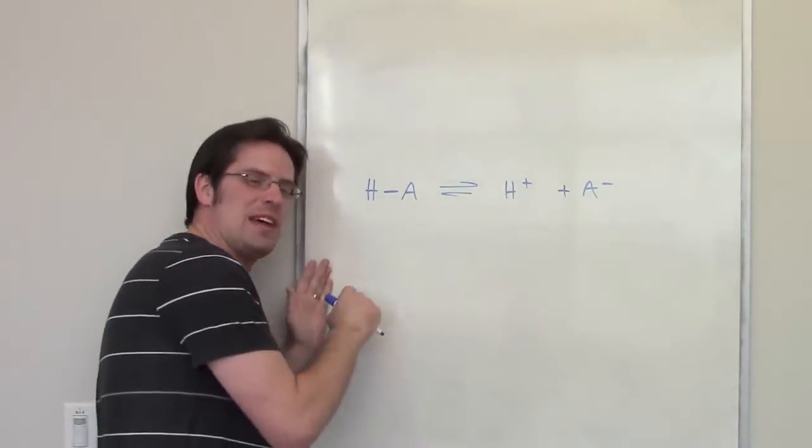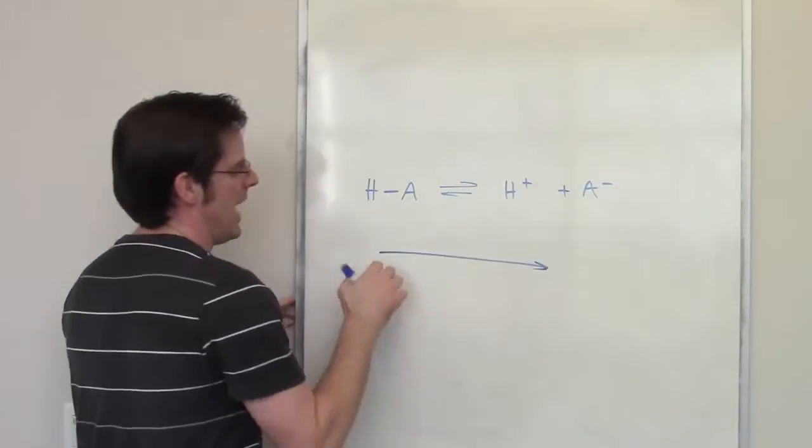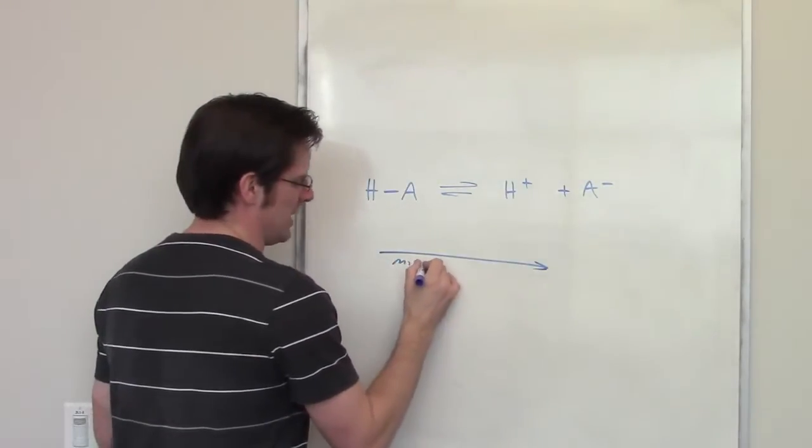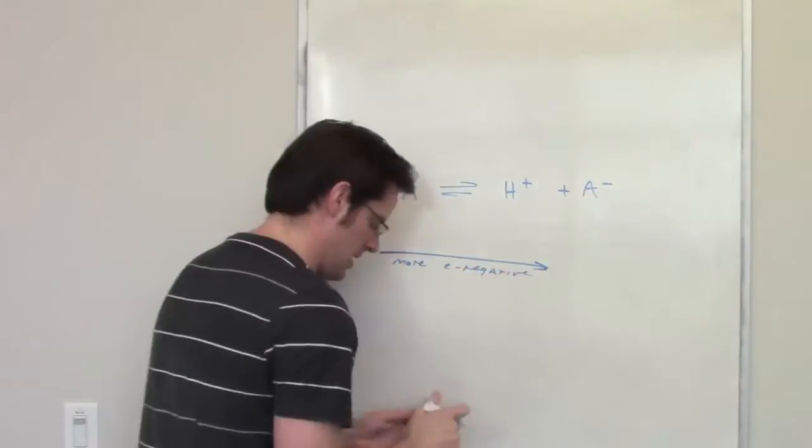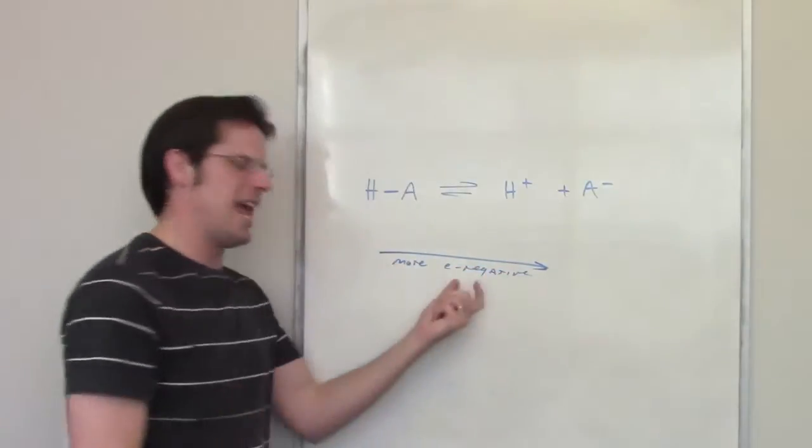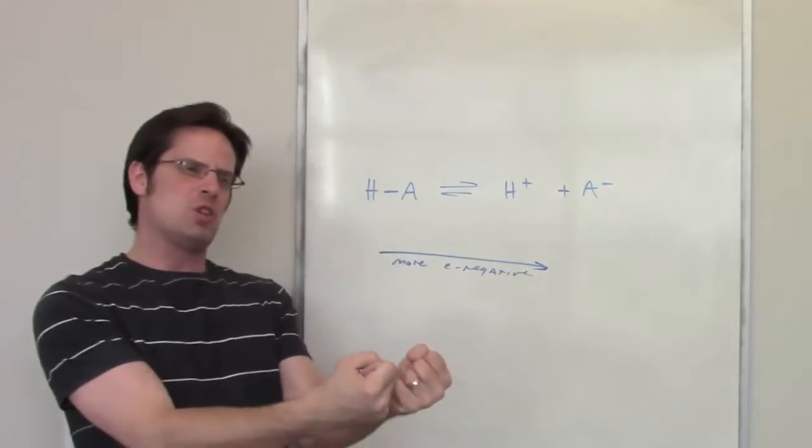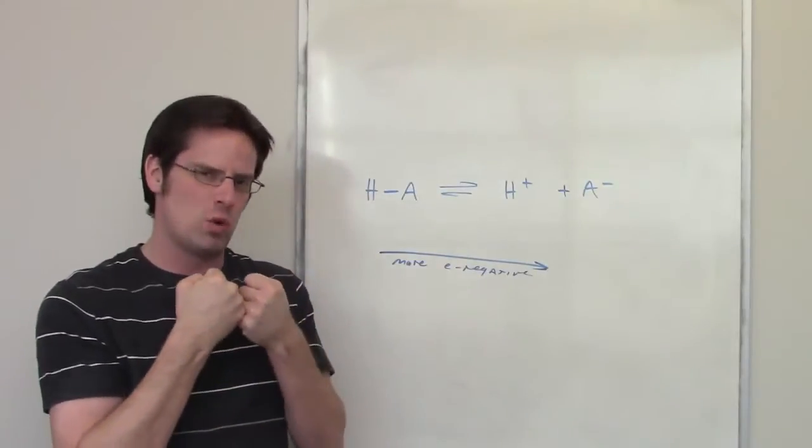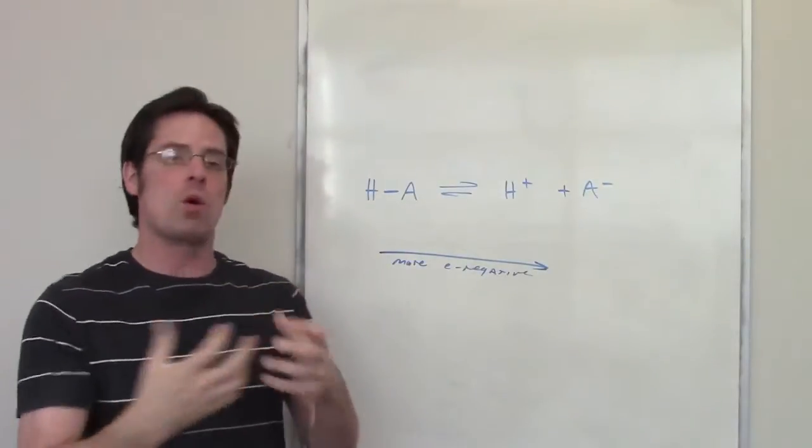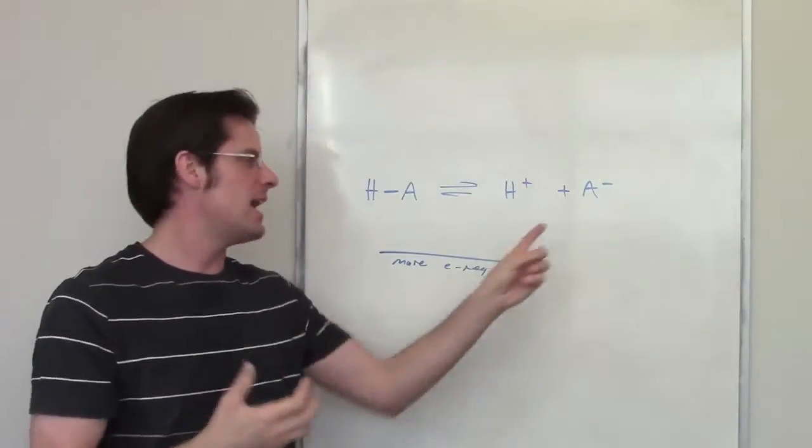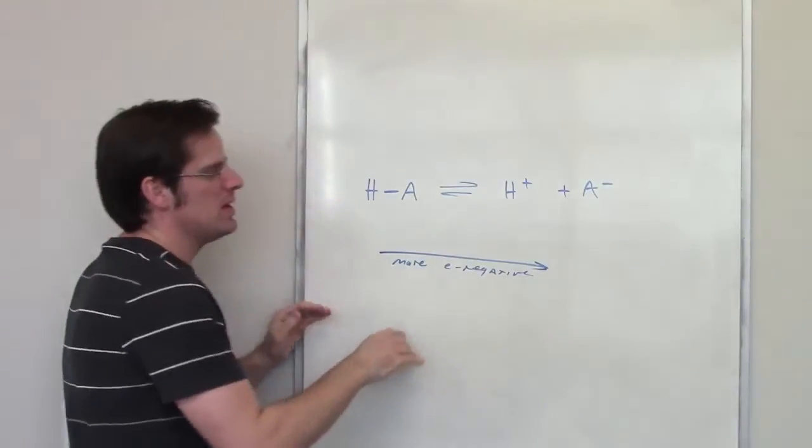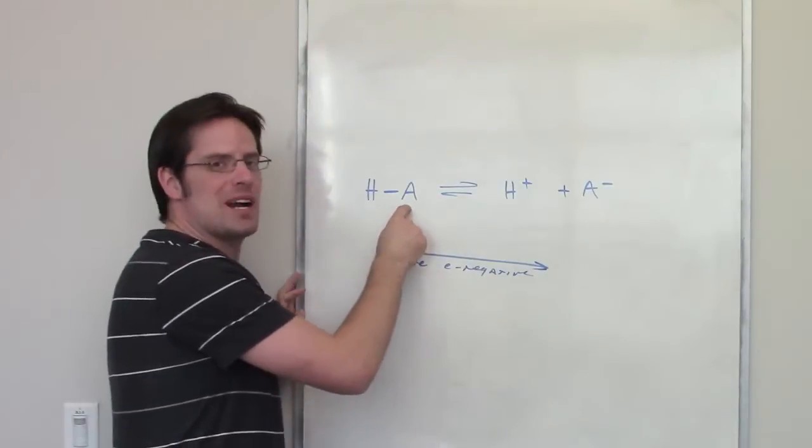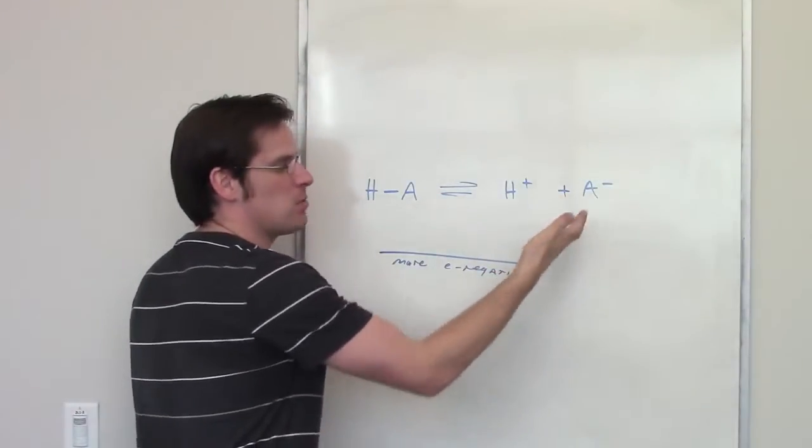As I've already taught you, going across a row from left to right on a periodic table, elements get more electronegative, which means as you get more electronegative, you're an element that is more able to suck electrons towards yourself, and therefore more able to handle a negative charge. So as you go from left to right across a row, A gets more and more acidic, because A- gets more and more stable.